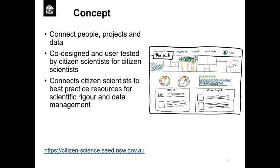The Citizen Science Hub has been co-designed and user tested by citizen science participants, people running citizen science projects, and people who want to access the relevant data — designed for citizen scientists by citizen scientists. Key components identified from the user groups were: explore, connect and contribute.